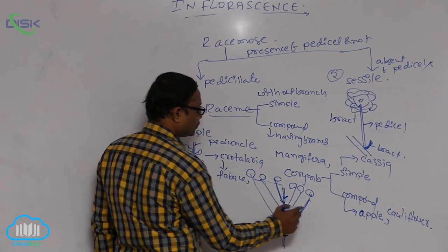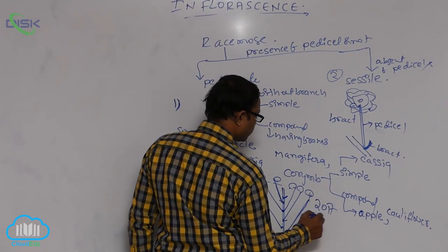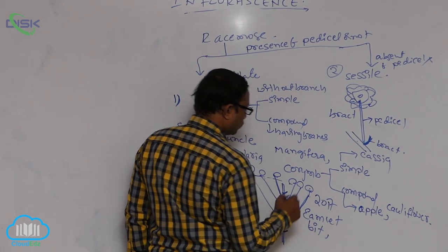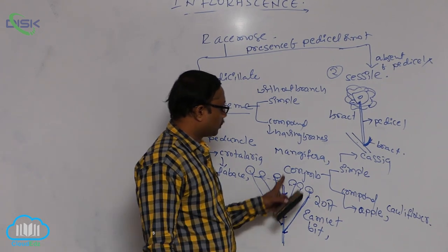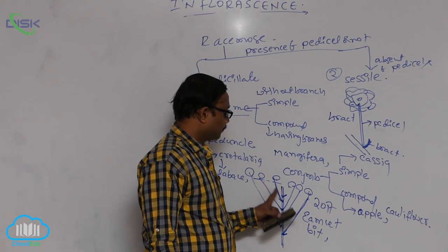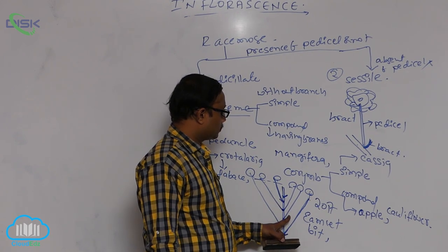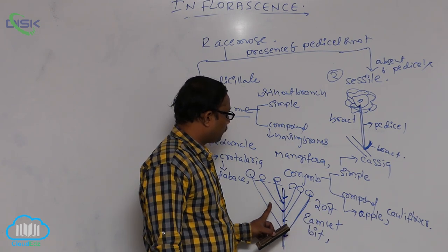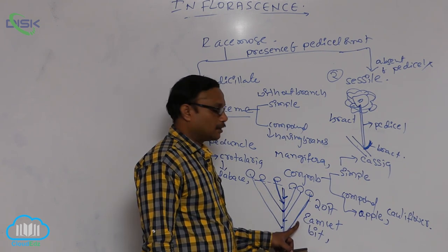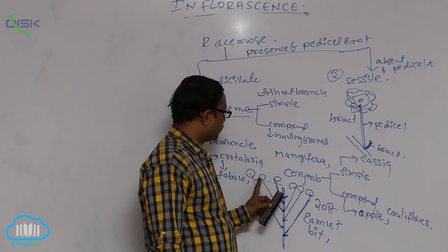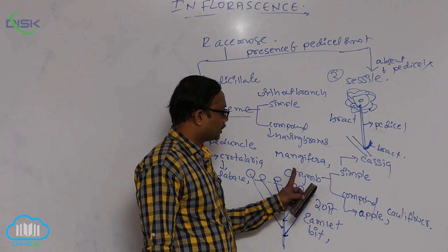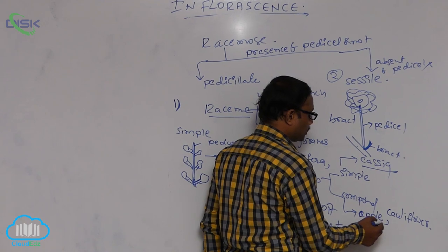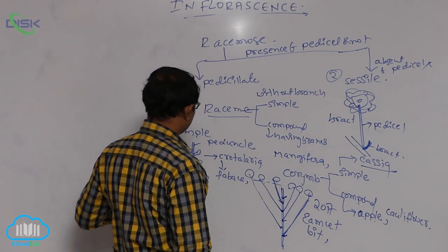This is a 2017 M-set important bit. The definition of corymb: flowers are formed at different nodes having different lengths of pedicels, but all flowers are present at the same height — that is known as corymb. Simple corymb example is Cassia; compound corymb example is apple or cauliflower.